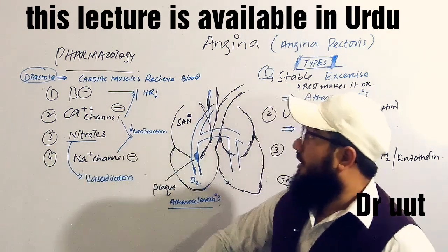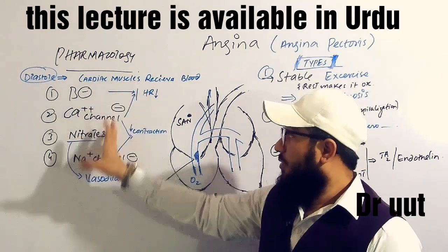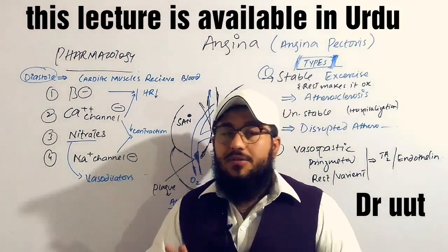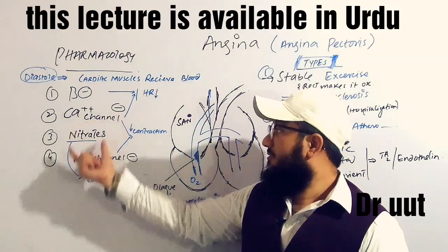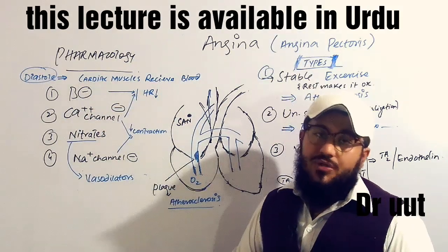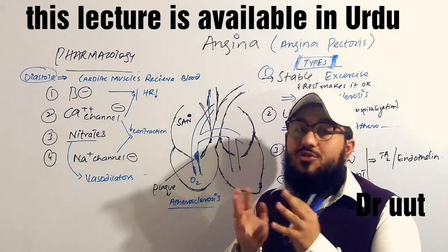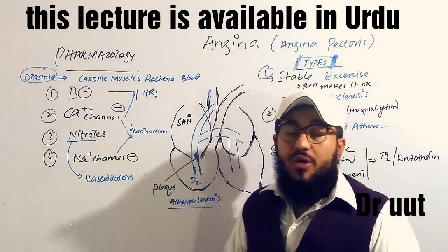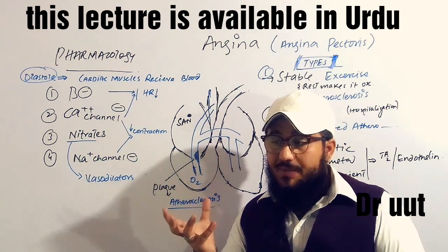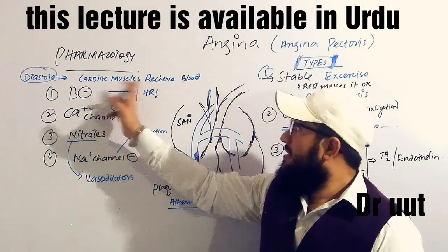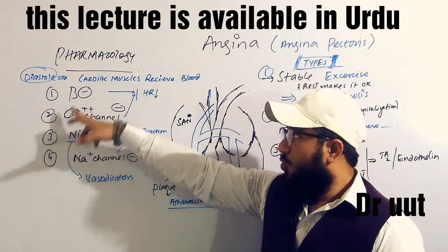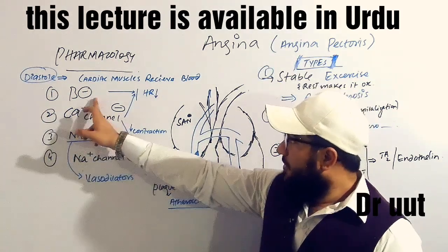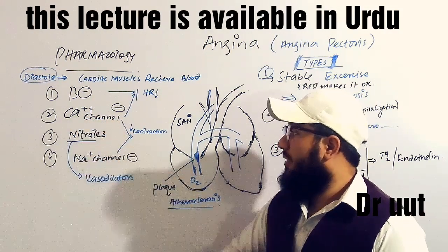Coming to the pharmacology of angina, the key principle is that cardiac muscles receive blood during diastole. So we should use medications that increase diastolic time. The four pharmacological drug classes used are: beta blockers, calcium channel blockers, nitrates, and sodium channel blockers.